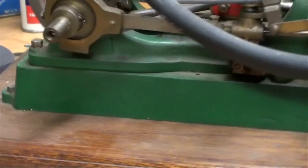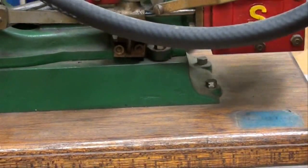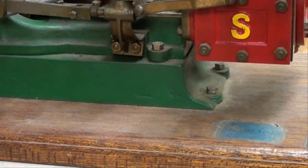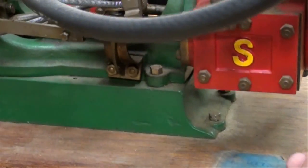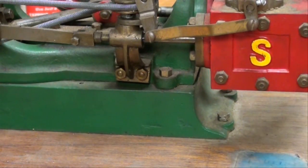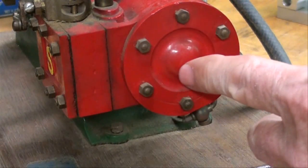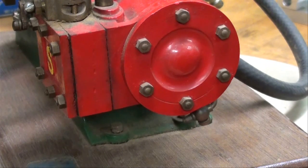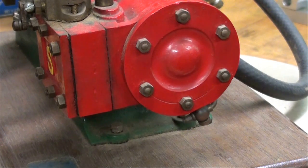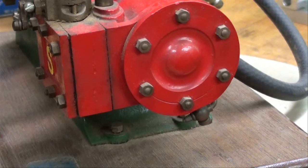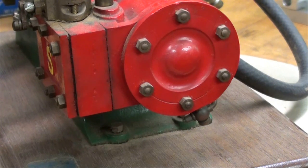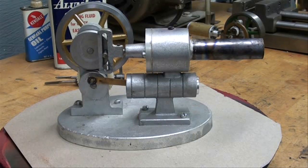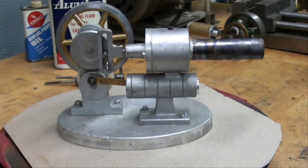On this Stuart model that I built many years ago, there are holes everywhere that had to be transferred. You can see right here there are six of them, and then there were six on the head and six behind there as well. I'm going to show you two different methods of doing that: transfer punches and transfer screws.